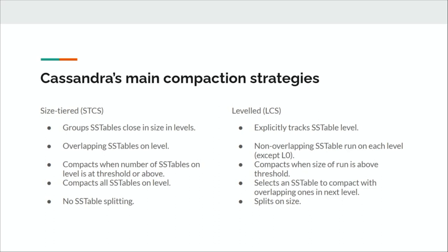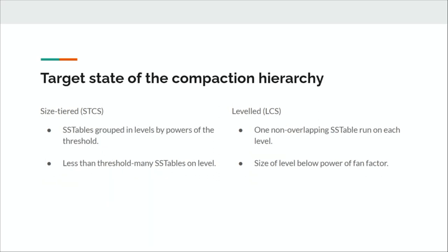If you look at STCS and LCS, there's basically nothing similar. Size-tiered compaction always creates one output file and never splits, while leveled compaction splits everything into very small SSTables. Leveled compaction tries to maintain a non-overlapping run of SSTables in each level, while size-tiered has overlapping ones. They even use different terminology — size-tiered has a threshold for the size growth per level, while leveled compaction uses a fan factor. But if you abstract away from the implementation and look at the target state of these compaction hierarchies, that's the most important thing.